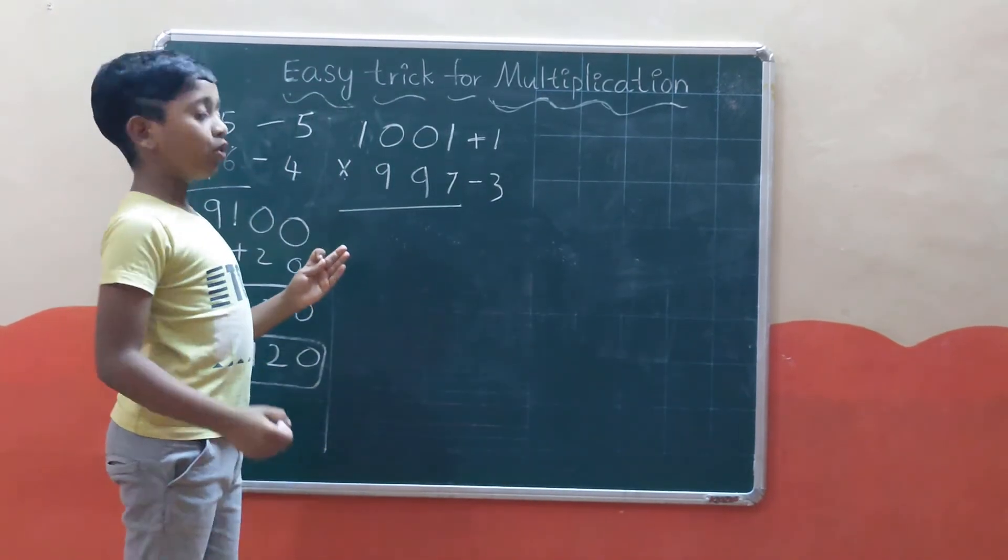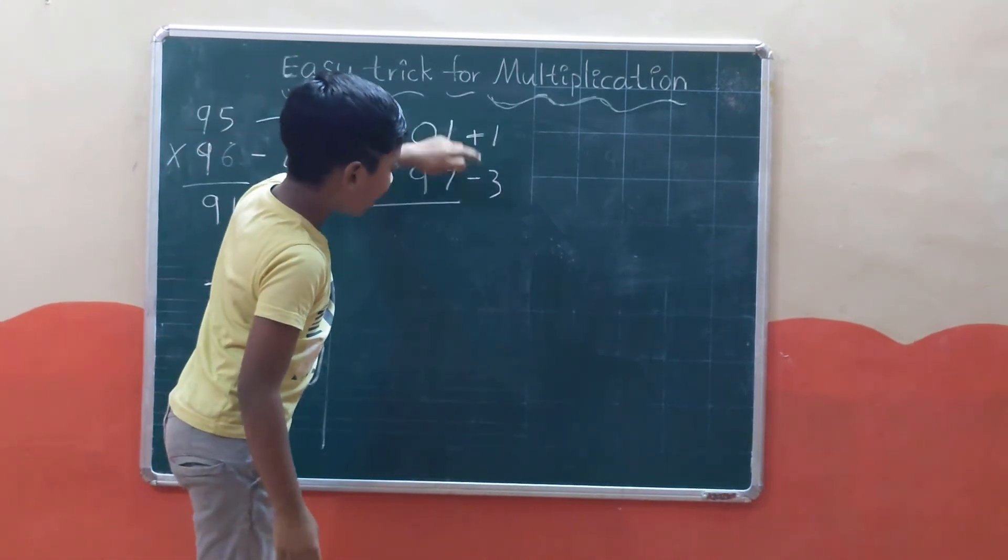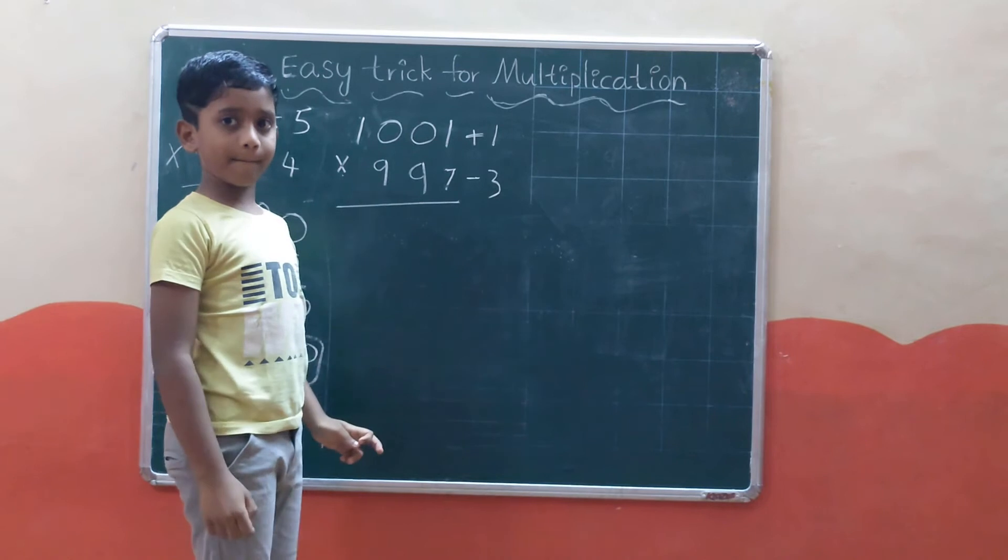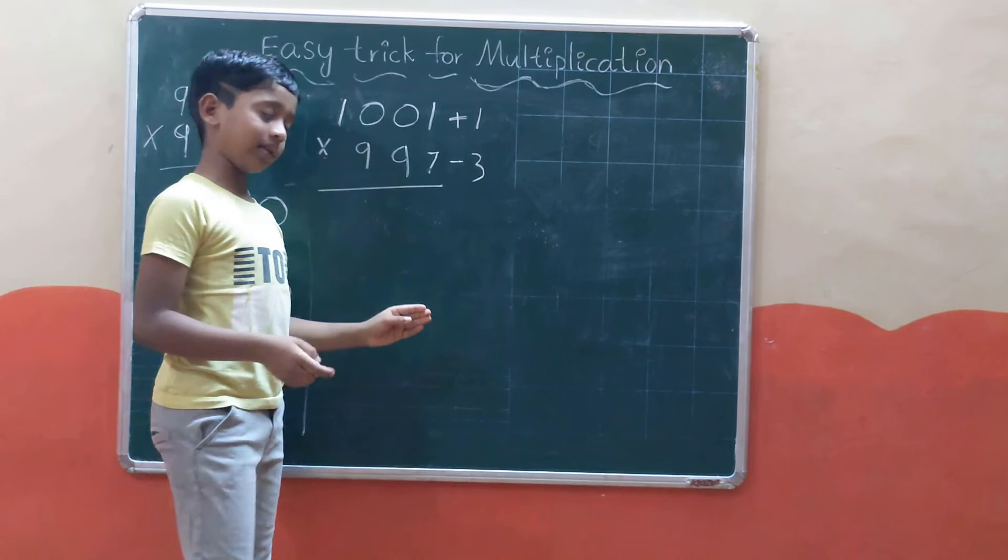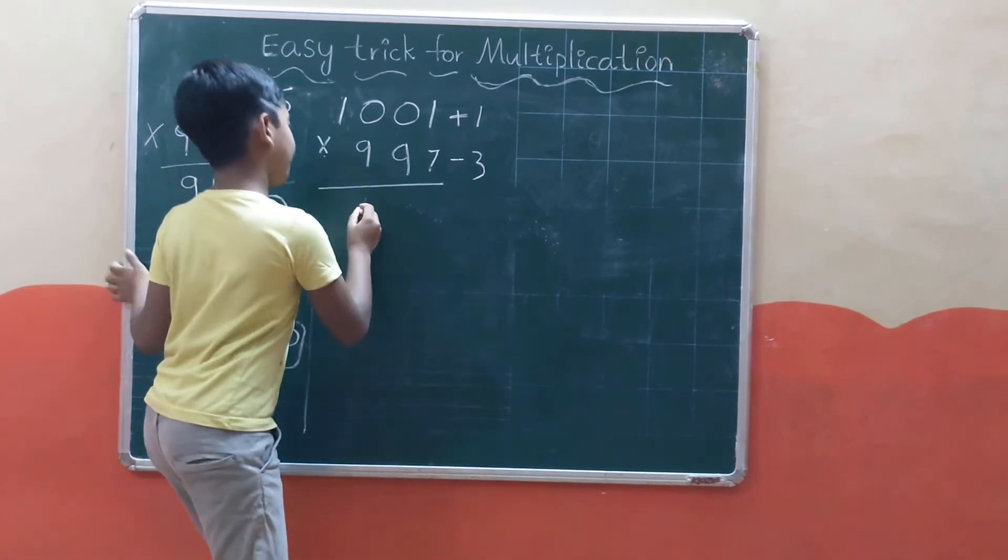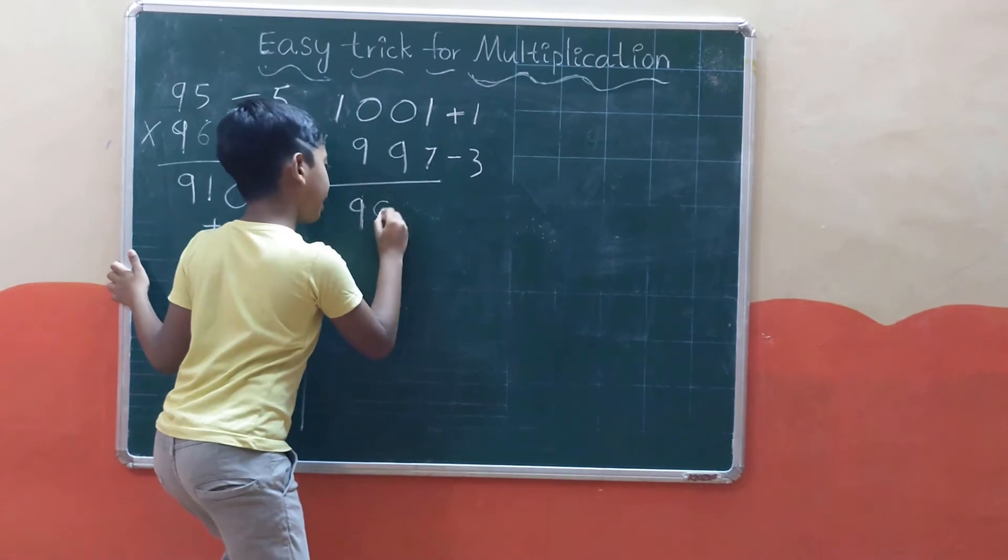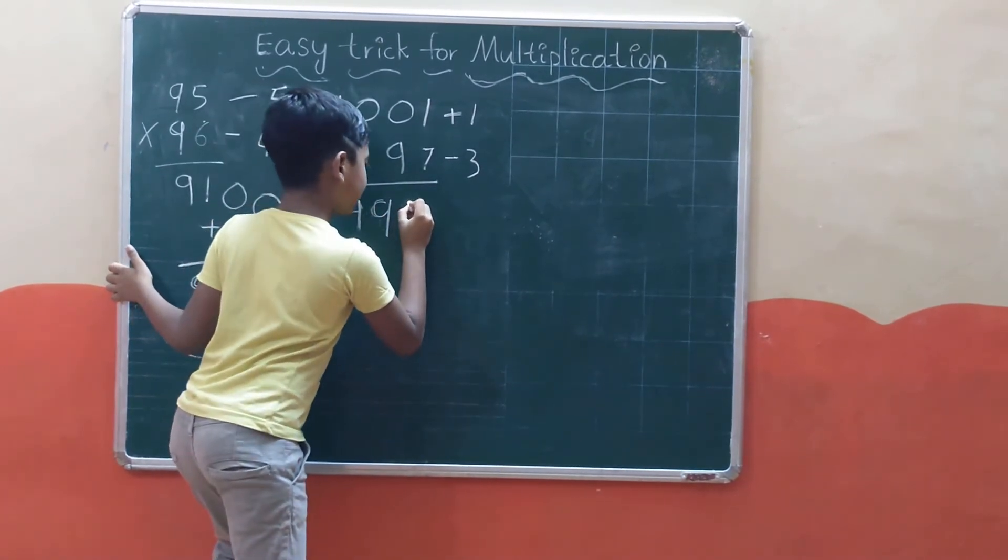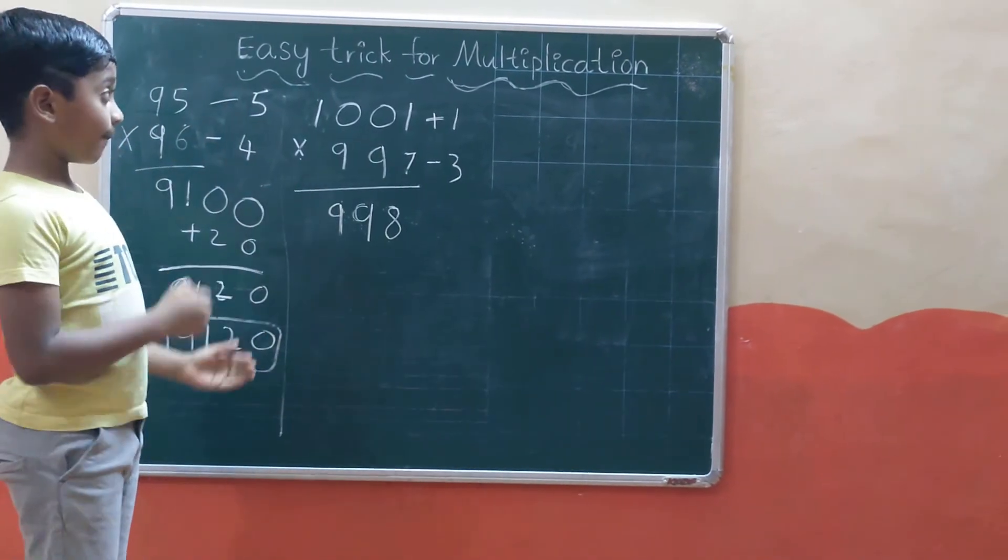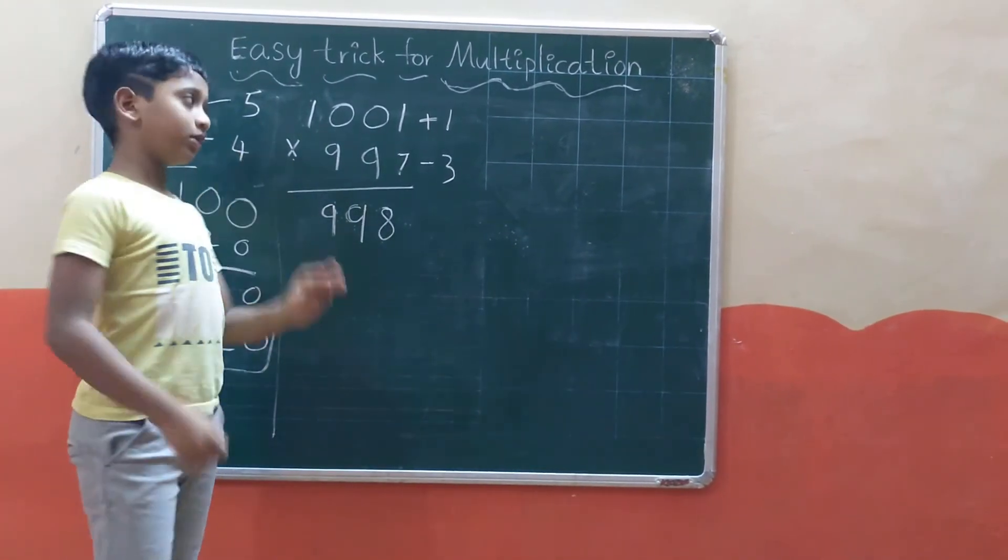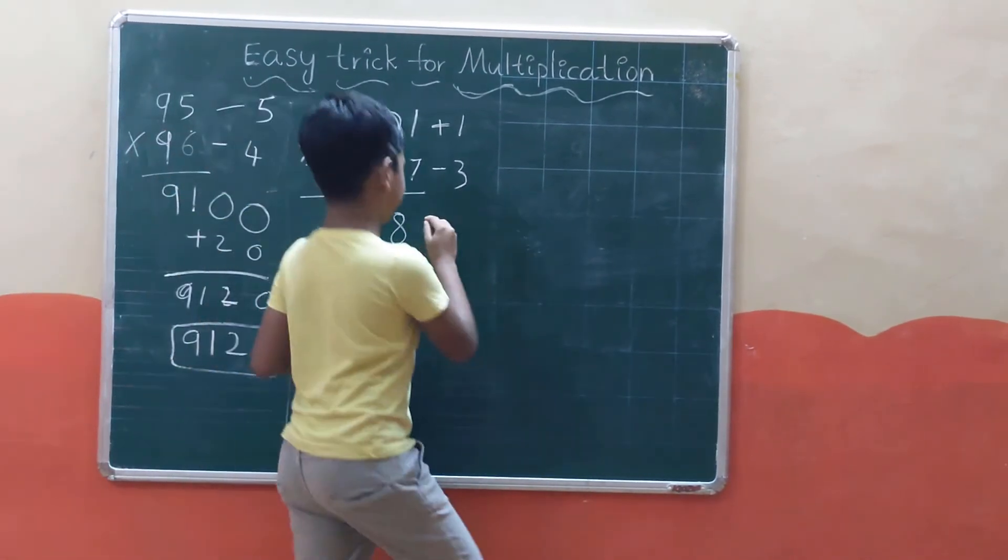Now we subtract: 1001 minus 3 gives us 998. Since we took 1000 as the base, which has three zeros, we write three zeros here.